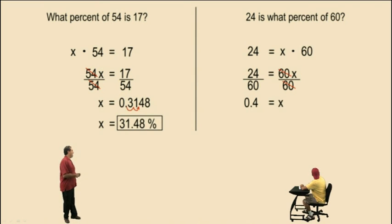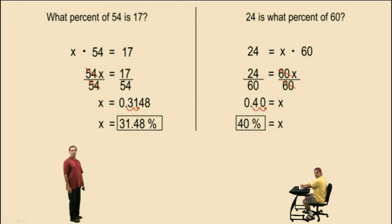Now remember, our unknown quantity x represents a percent. That means our final answer has to be a percent. Therefore, we must change this decimal to a percent by moving the decimal two places to the right. And our answer is 40%. And that's it. Let's do another one.